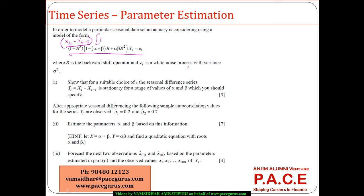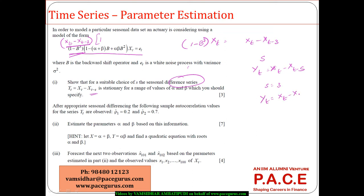Because there is an Xt minus Xt-3 coming up, we can look at (1 minus B³)Xt as Xt minus Xt-3, meaning a 3-period lag. The seasonal parameter S leads us to define Yt = Xt minus Xt-S. Taking S equal to 3 gives Yt = Xt minus Xt-3. For this choice of S=3, we want to check whether the series is stationary.